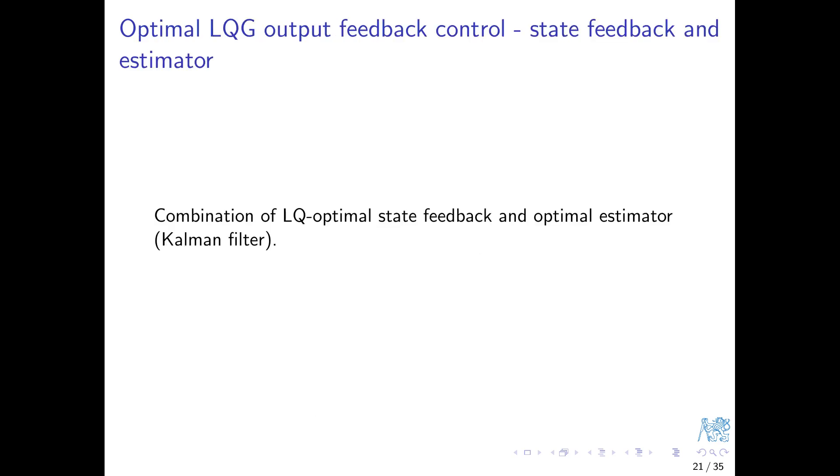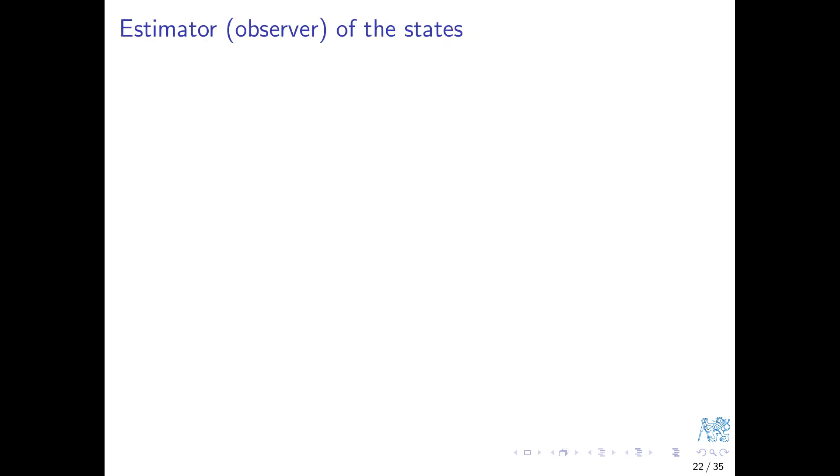The framework is well known as LQG optimal control. It's based on a combination of an LQ optimal state feedback regulator and an optimal estimator, the Kalman filter. We've had enough of the former in this course. Let's have a brief look into the latter. It will give us the clue for the letter G in LQG. We consider a standard LTI state space model given by the quadruple of matrices A, B, C, and D.